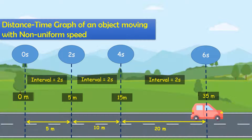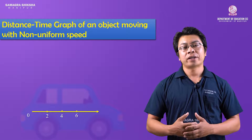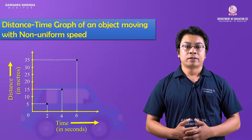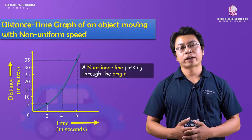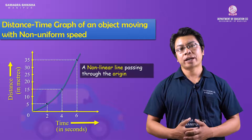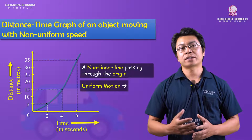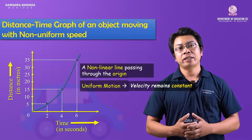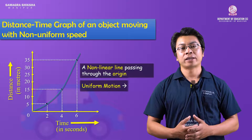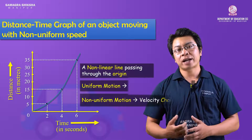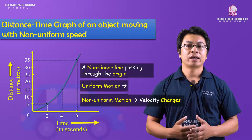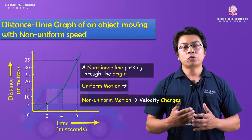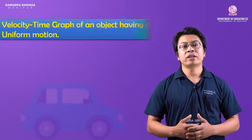For a body having non-uniform motion, the distance-time graph is not a straight line — it is non-linear. My dear students, when a body's velocity is constant, the body has uniform motion. When the body's velocity is not constant, the body has non-uniform motion. Now let's look at the velocity-time graph for a body having uniform motion.